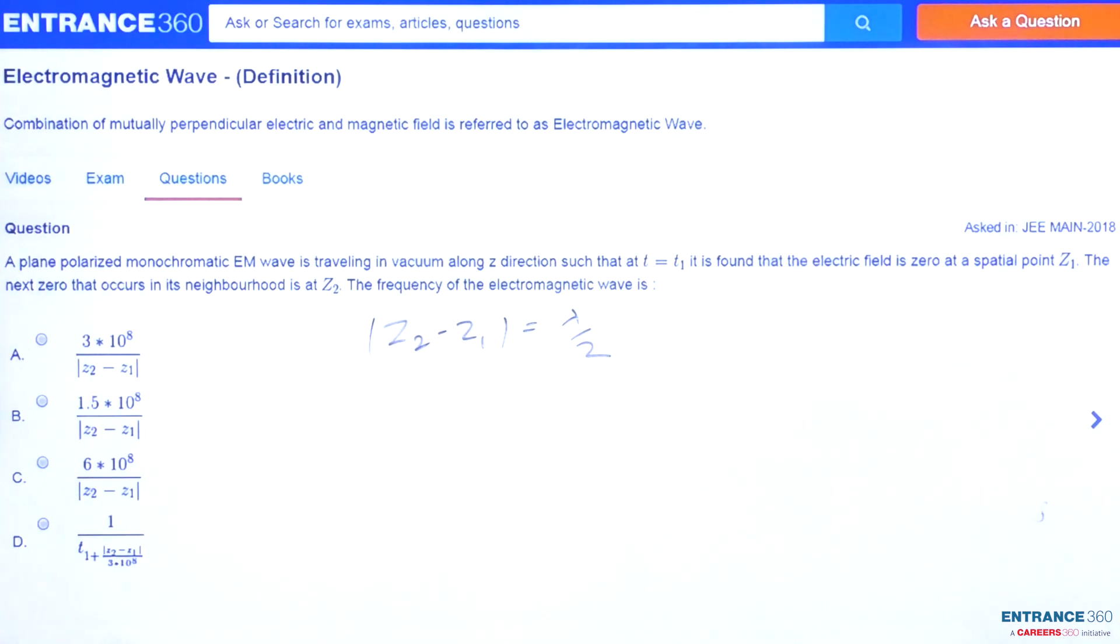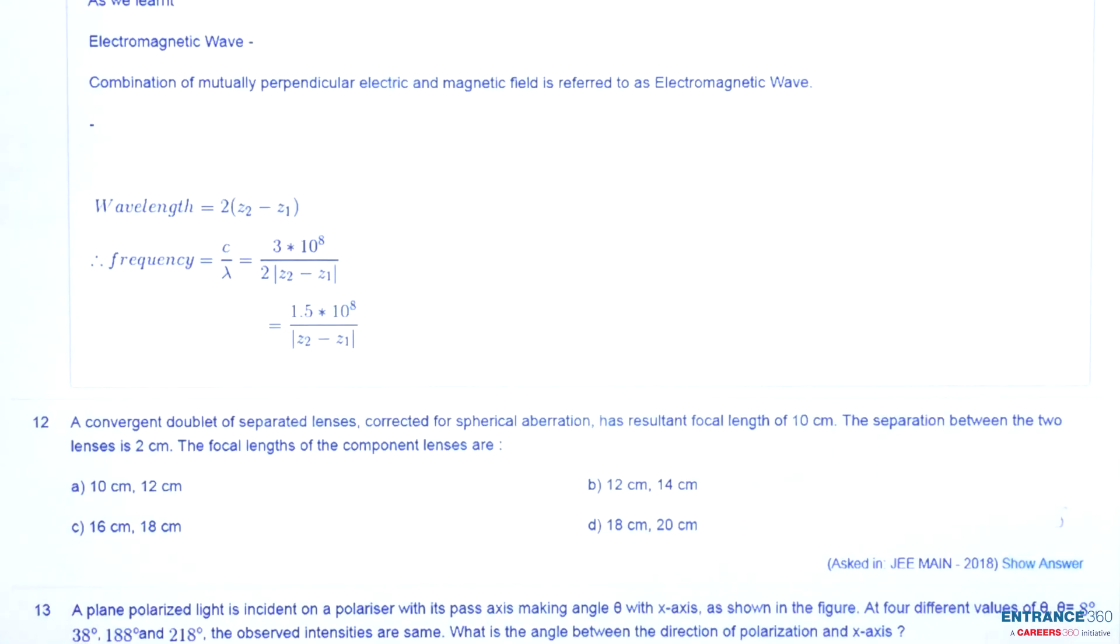So let's try to solve this question. Students, to solve the question we must understand the concept which will be helpful. The concept here says that an electromagnetic wave is a combination of mutually perpendicular electrical field and magnetic field.